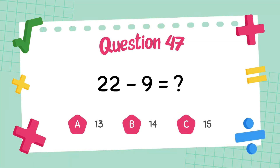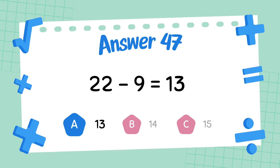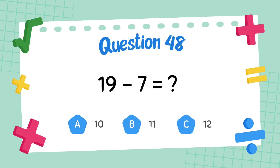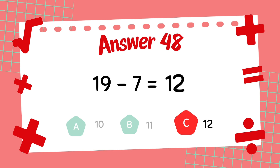What is 22 minus 9? The answer is 13. What is 19 minus 7? The answer is 12.